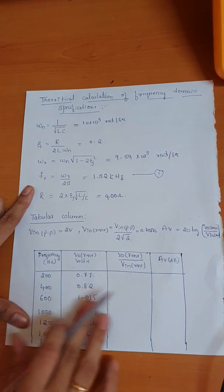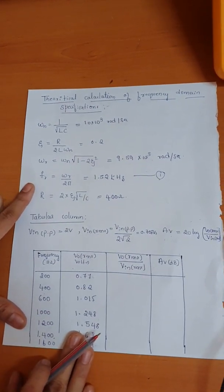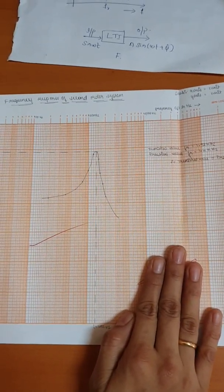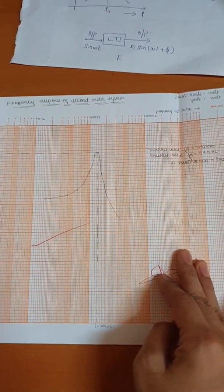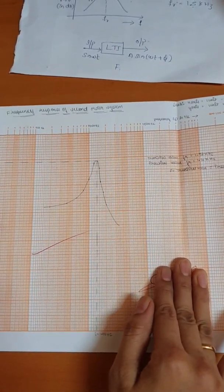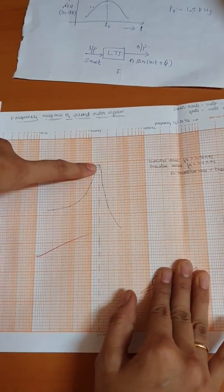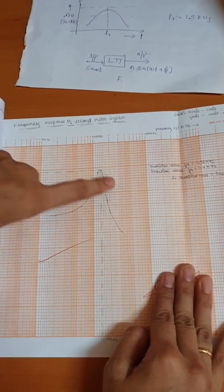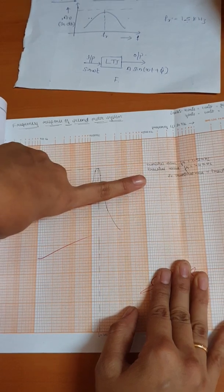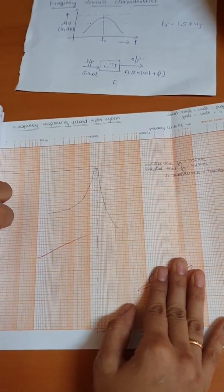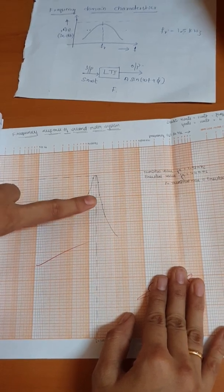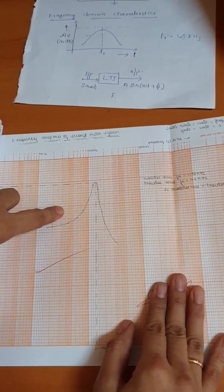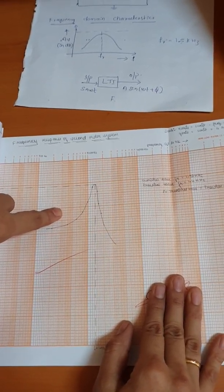Once the tabular column is complete, we plot the graph on a semilog sheet. On the x-axis we have frequency and on the y-axis voltage gain. At the particular frequency where we get maximum voltage, that is our resonant frequency. From theoretical calculation, fr equals 1.52 kilohertz, and from practical measurement we obtained the resonant frequency as 1.4 kilohertz. We can consider that the theoretical calculation is equal to the practical result. Thank you.